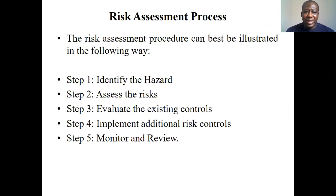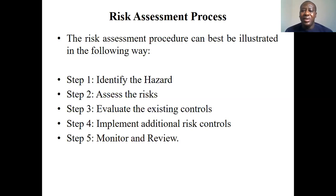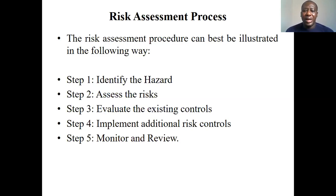The risk assessment process has five steps. The first is to identify the hazard. The second is to assess the risk. The third is to evaluate the existing controls. The fourth is to implement additional risk controls. The fifth is to monitor and review. After identification, a risk assessment is done, existing controls are evaluated to mitigate or avoid the risk, additional risk control measures are implemented if existing ones fall short, and then monitoring and reviews are conducted.